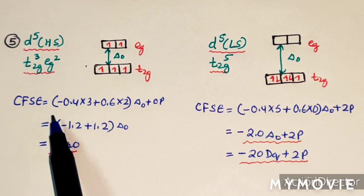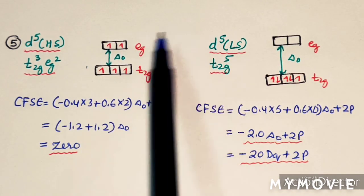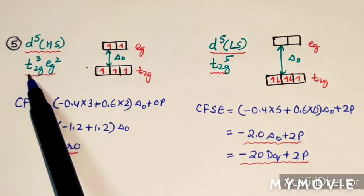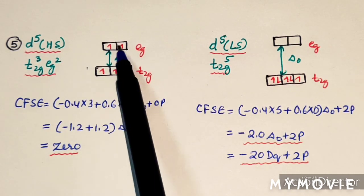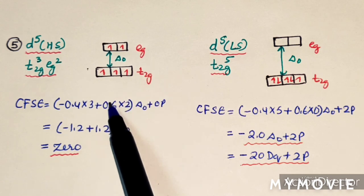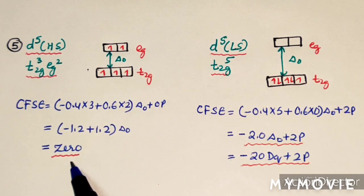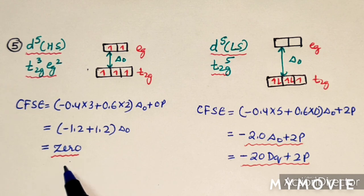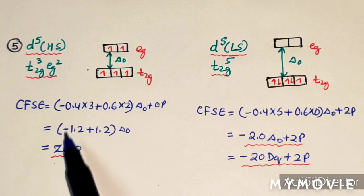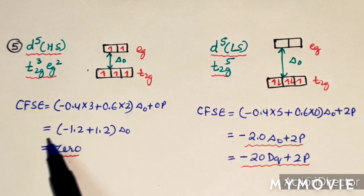For D5 high spin complex, electrons fill as 1, 2, 3, 4, 5 giving configuration T2G3EG2. CFSE = 3×(−0.4) + 2×(0.6) = 0, because the stabilization equals the destabilization. For half-filled and fully-filled configurations, the CFSE equals zero — as much as it is stabilized, it is equally destabilized.